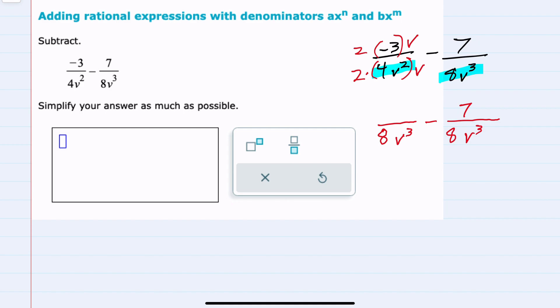Now we can see that in the denominator, we have 2 times 4, which is 8, v² times v, which is v³.